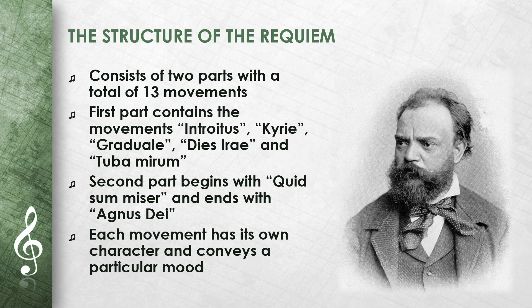The Requiem consists of two parts, with a total of 13 movements. The first part contains the movements Introit, Kyrie, Gradual, Dies Irae, and Tuba Mirum. The second part begins with Quid Sum Miser and ends with Agnus Dei. Each movement has its own character and conveys a particular mood. The structure corresponds to the traditional form of the Catholic Requiem Mass.